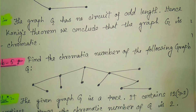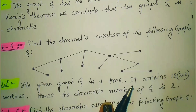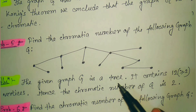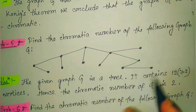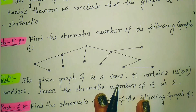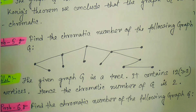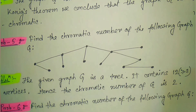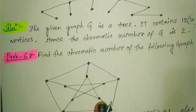The next problem: find the chromatic number of the following graph. This graph has no circuits and is a tree. A tree is a kind of bipartite graph, and its chromatic number is always 2. So the chromatic number for this graph is 2.